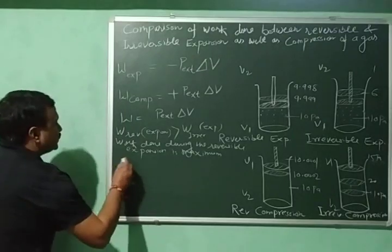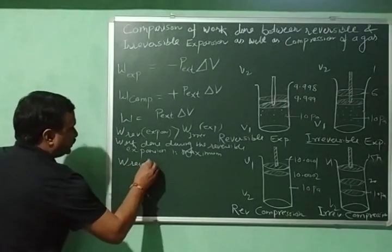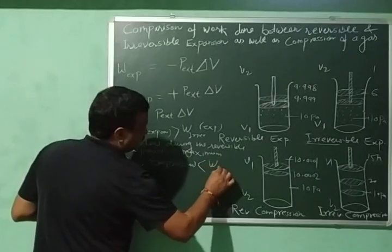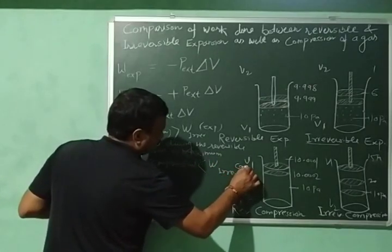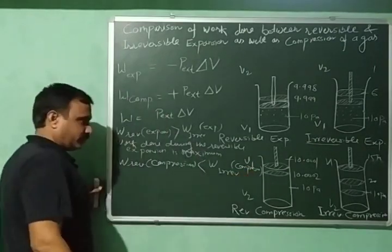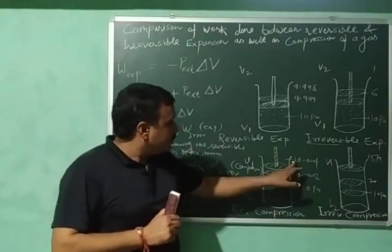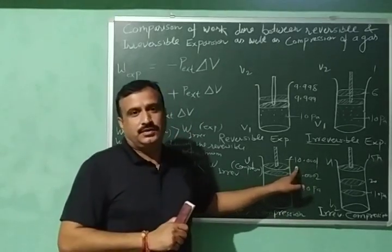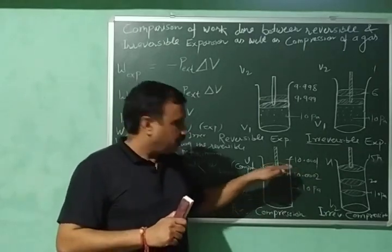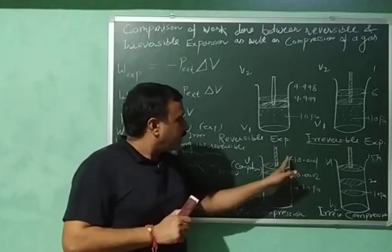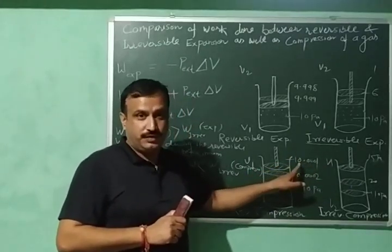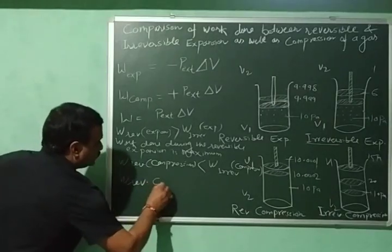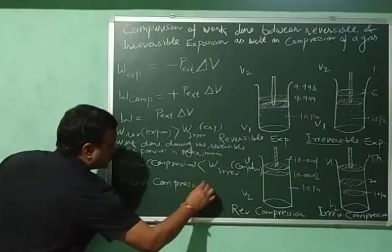So the work done during reversible compression is less than the work done during irreversible compression. Furthermore, the values of external pressure in reversible compression are the minimum values of external pressure, because the reversible process is carried out very slowly. Therefore, the work done during reversible compression is minimum.